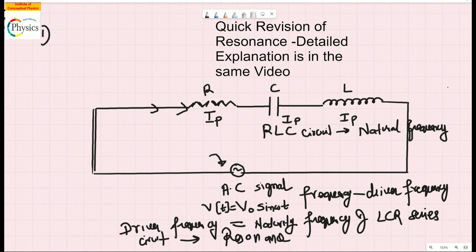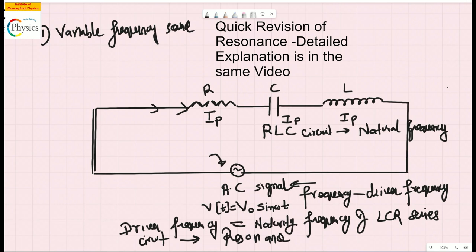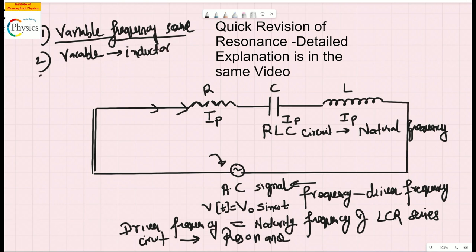There are three ways to achieve resonance. You can use a variable frequency source, which means you change the driving frequency of the AC signal to make it equal to the natural frequency. The second way is to vary a variable inductor — you can change the inductor value.